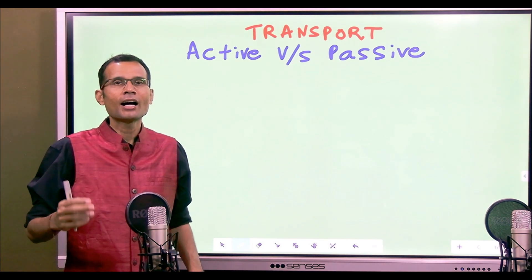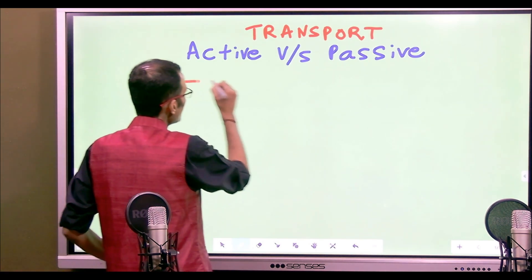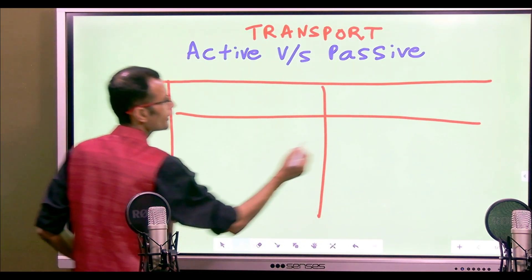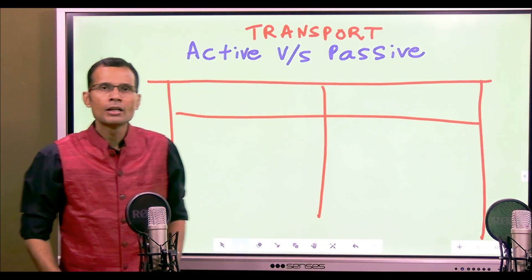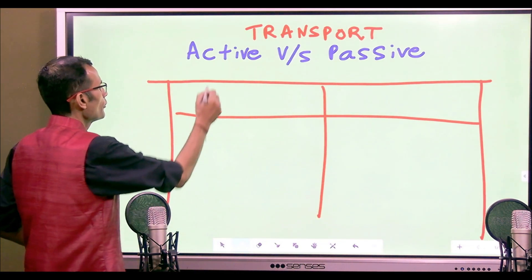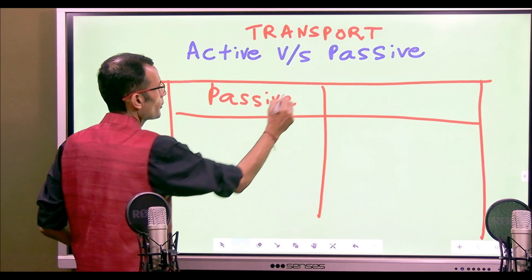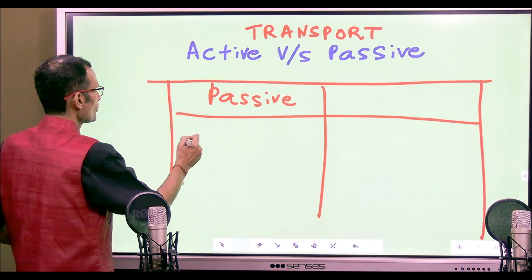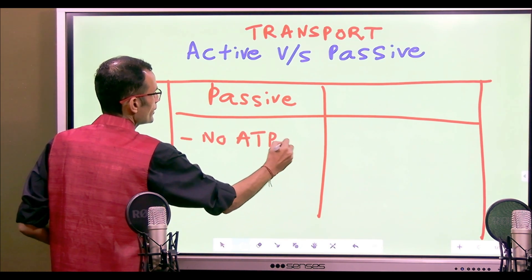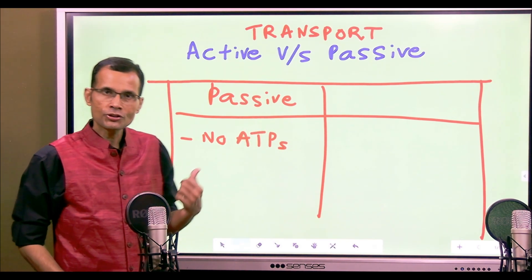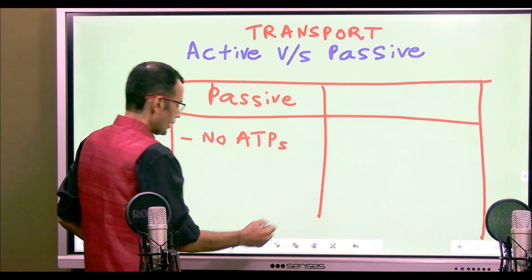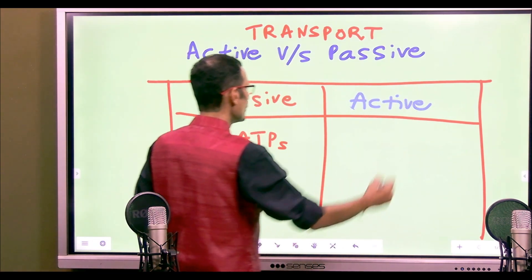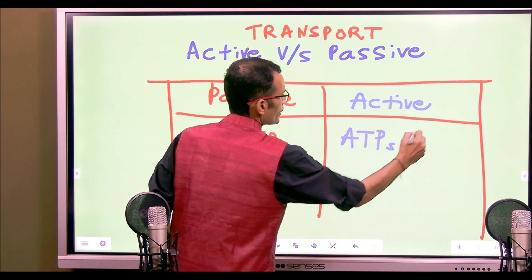There are two important features that differentiate between active and passive transports. Passive transports are called passive because they do not require ATP — no ATPs are utilized. On the other hand, when a transport is active, ATPs are consumed.